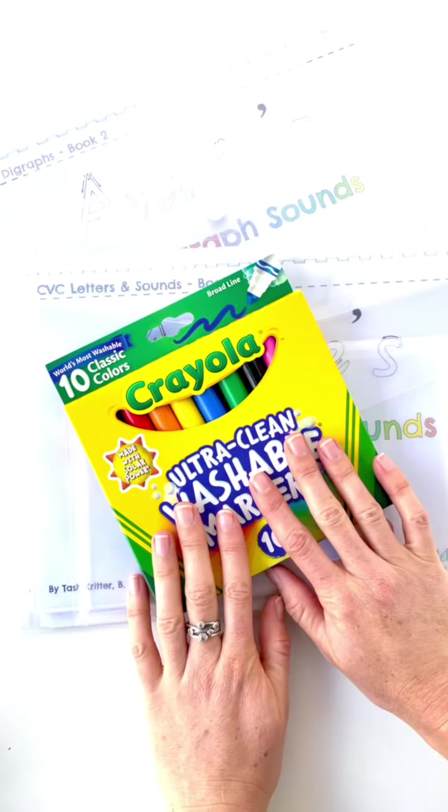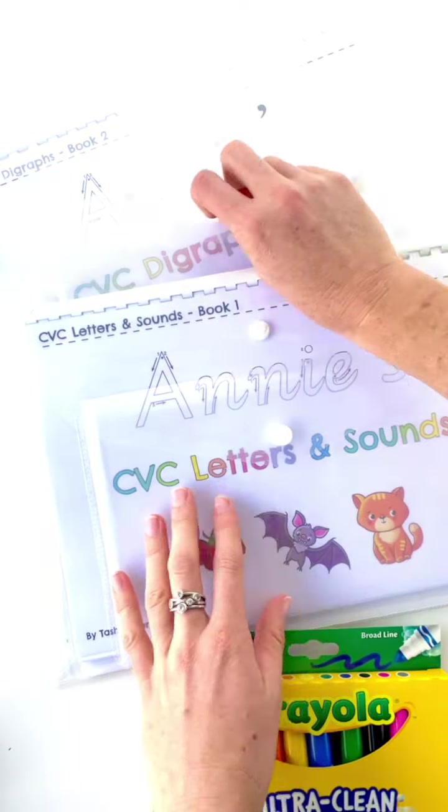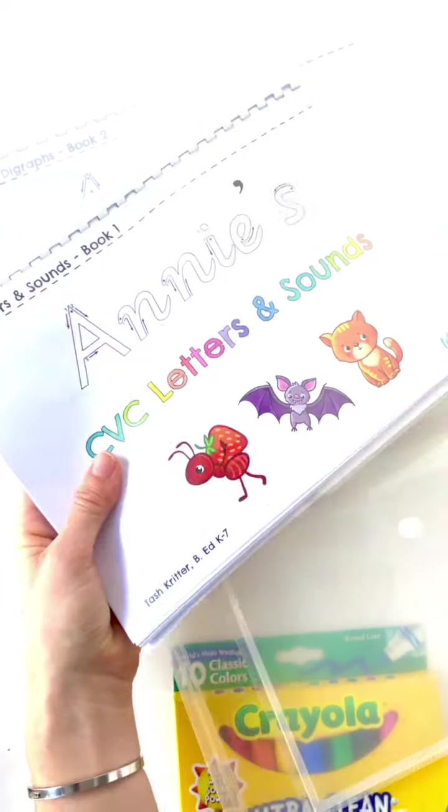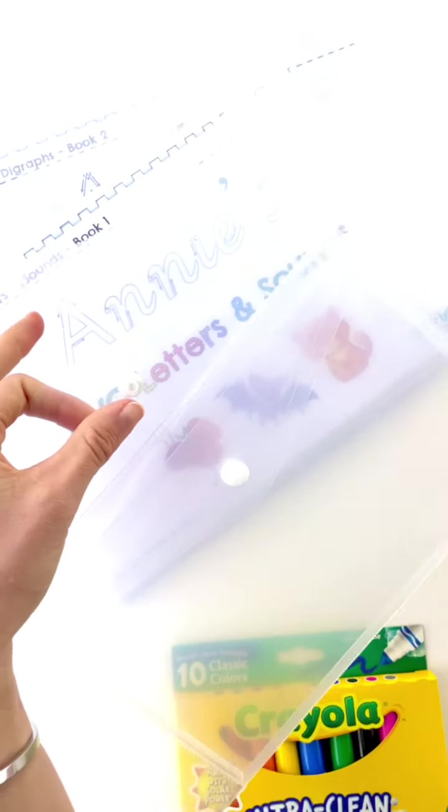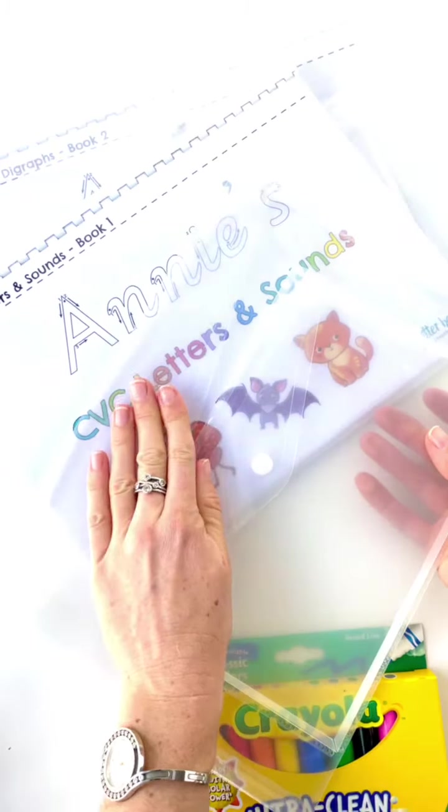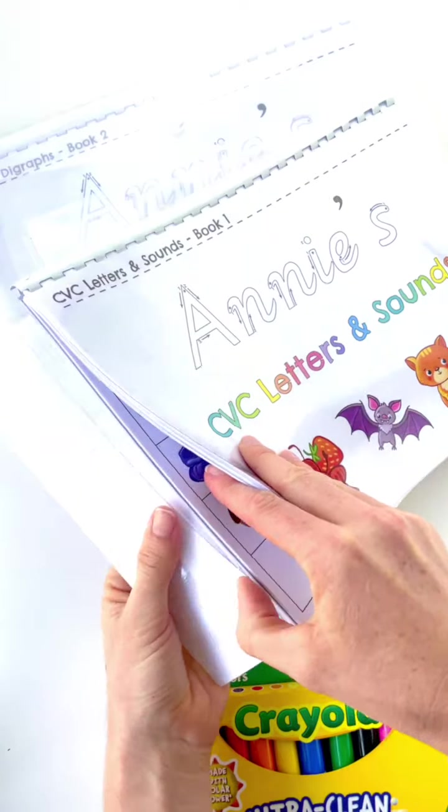They do come with the free washable markers to use on the white clean pages. So this is the first book. They come with a folder and then you can put the cutouts in the front here. Now I don't cut out for you, but for the whole pack you have three pages of cutouts.